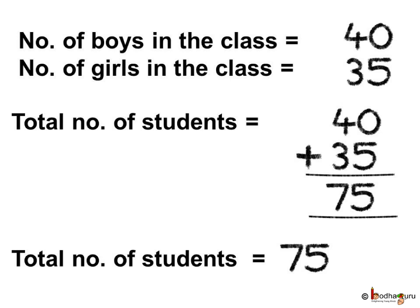Let us see again how we solved this problem. Number of boys in the class is equal to 40. Number of girls in the class is equal to 35. Total number of students is 40 plus 35, which is equal to 75. Thus, the total number of students are 75.